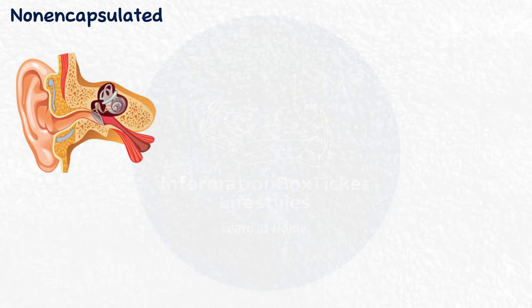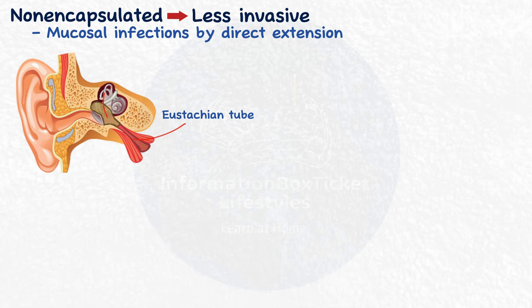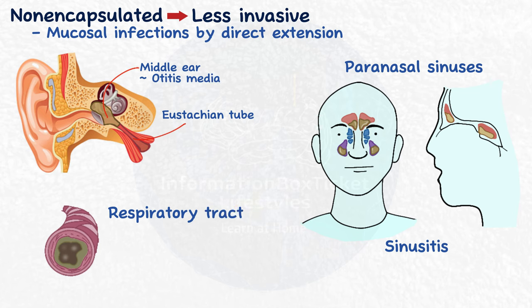Non-encapsulated strains of Haemophilus influenzae, on the other hand, are less invasive and typically cause mucosal infections by direct extension. For example, they may travel up the eustachian tubes into the middle ear, resulting in otitis media. If they spread to the paranasal sinuses, sinusitis develops. Finally, if they enter the respiratory tract, they can induce bronchitis (bronchial inflammation) or pneumonia (lung inflammation).